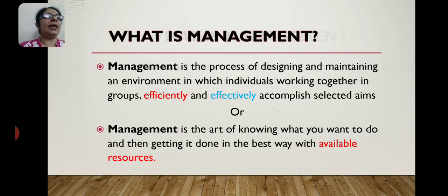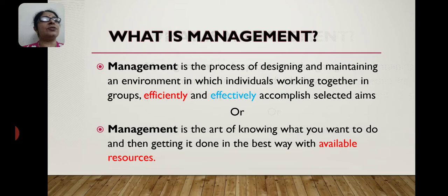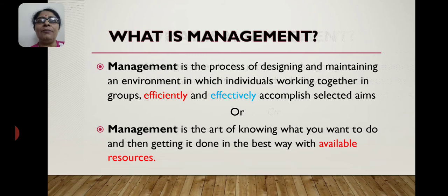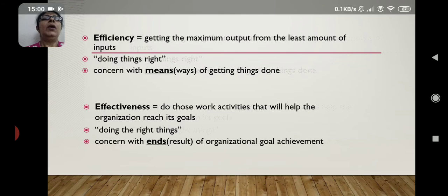Dhyan dene wali baat yeh hai ki 'getting it done' — khud nahin karna hai, doosron se karwana hai. Getting it done in the best way with available resources — available resources ka matlab hai ki humare paas kya cheezein available hain: kitne persons mile hain kaam karne ke liye, kaun si machinery hai, kitna time mil raha hai, expenditure kitna allowed hai, budget kitna hai — yeh sab milake management hai.